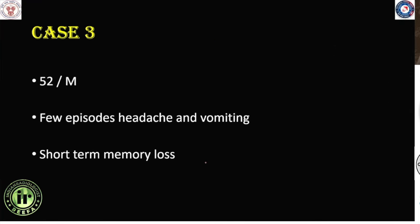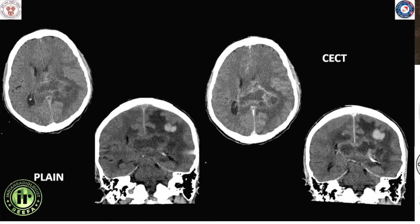Moving on to the next case: a 52-year-old gentleman with few episodes of headache, vomiting, and short-term memory loss. The CT scan shows non-contrast images on the left and contrast images on the right. There is a large tumour crossing the midline, extending across the corpus callosum from the left to the right, showing heterogeneity due to hyper-density secondary to hemorrhage, with an irregular peripheral rind of enhancement — a diagnostic clue towards a high-grade glial neoplasm with a butterfly appearance, consistent with glioblastoma.